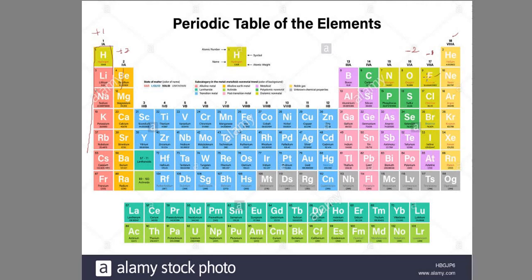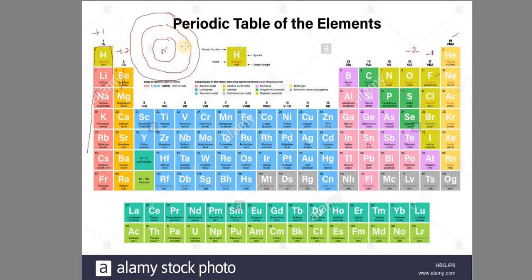Fluorine, chlorine, bromine, iodine have oxidation state −1. The valence shell and valence shell orbitals are key — the nucleus is surrounded by electrons. The valence shell refers to the outermost shell: second shell, third shell, fourth shell.